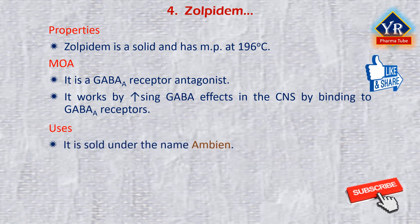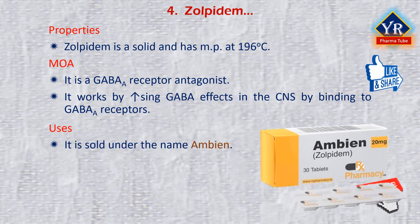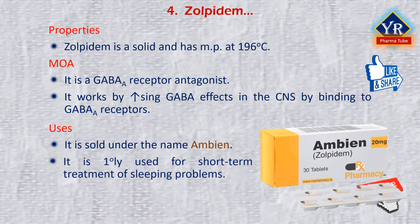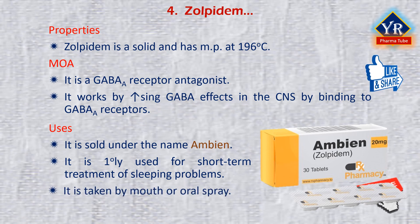Zolpidem is sold under the brand name Ambien. It is a medication primarily used for the short-term treatment of sleeping problems. Guidelines recommend it be used only after cognitive behavioral therapy for insomnia and behavioral changes such as sleep hygiene have been tried. It decreases time to sleep onset by about 15 minutes, and at larger doses helps people stay asleep longer. It can be taken by mouth and is available in conventional tablets, sublingual tablets, or oral spray.